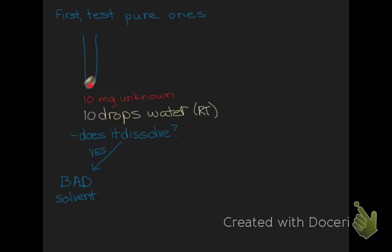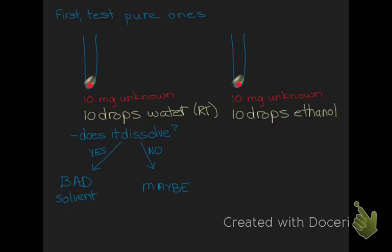If it does not dissolve at room temperature, that's a positive sign that pure water may be the right solvent choice. At the same time, run the same test with another 10 milligram sample of acid, this time adding room temperature ethanol to see how it reacts. Add 10 drops at room temperature and see whether it dissolves or not. If it dissolves, ethanol is not appropriate; if it doesn't dissolve, then ethanol might be an appropriate solvent.